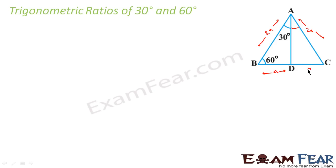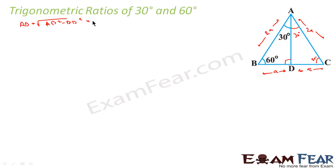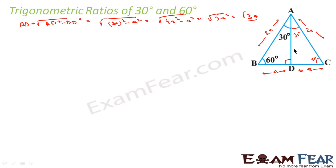Both triangles ABD and ACD are congruent — two angles are matching and one side AD is common — so BD = DC = a, and the total BC = 2a. Now let us find the length AD. In right triangle ABD, AD = √(AB² − BD²) = √(2a)² − a²) = √(4a² − a²) = √(3a²) = √3·a.